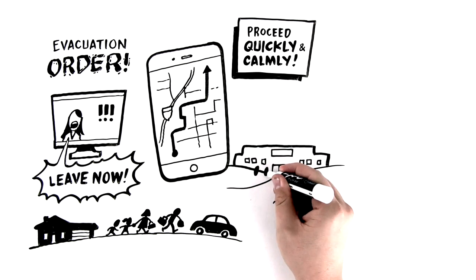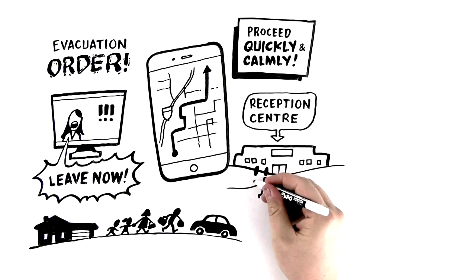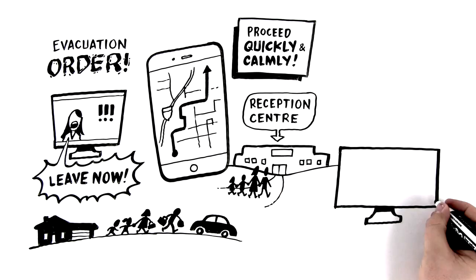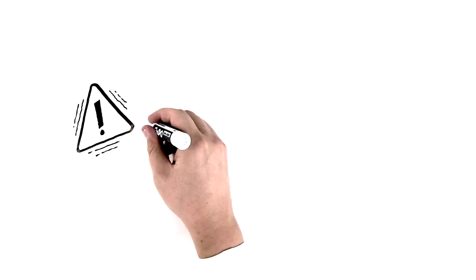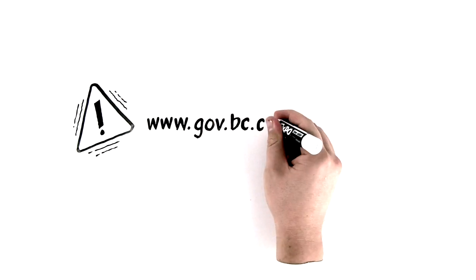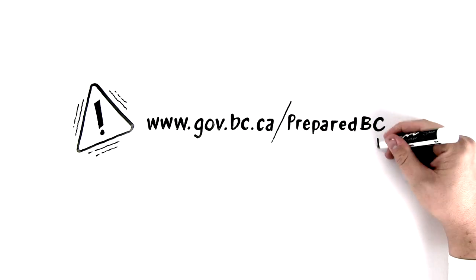An emergency social services reception center may be set up for those needing additional support. Local officials will let you know when it's safe to return home. For more information visit www.gov.bc.ca/preparedbc.